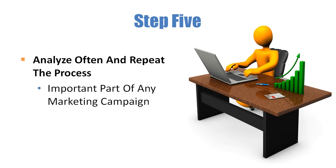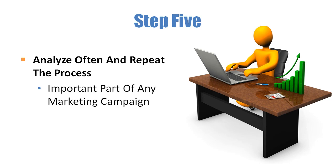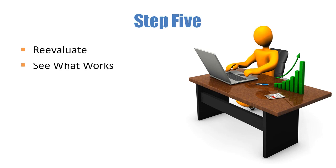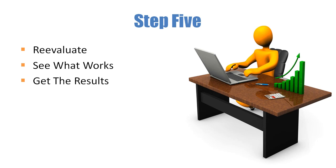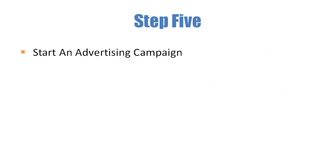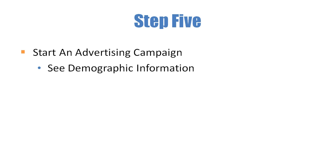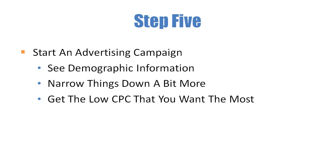Step 5: Analyze often and repeat the process. Analyzing and repeating is an important part of any marketing campaign — you need to reevaluate and see what works in order to get the results you want. Your click-through rate can be increased and your total cost decreased much further once you start an advertising campaign with Facebook. Once you've started advertising, you will see demographic information and can narrow things down further to get the low CPC that you want.